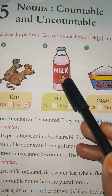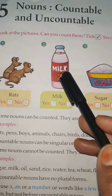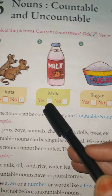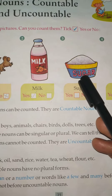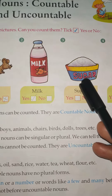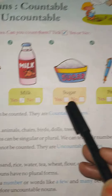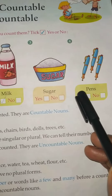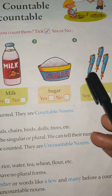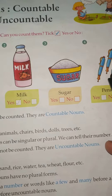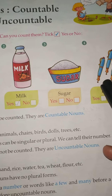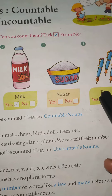Milk. Can we count them? No. Sugar. Can we count them? No. And here, pans. One, two, three. Can we count them? Yes.